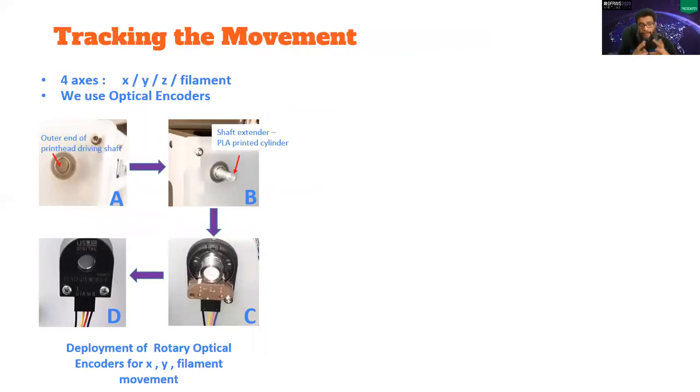So to track the movement, initially we evaluated accelerometers and IMU sensors, but we found them to be very sensitive to normal background noises, vibration noises within the printer and even in the environment like the printer table, etc. Then we switched to optical encoders. We found them pretty robust to the noises and even more accurate as well. We used rotary encoders for the X axis, Y axis and the filament axis. Like these are the rotary shafts and we deployed these sensors on top of it.